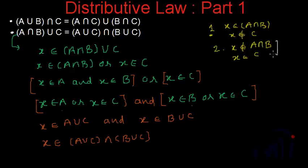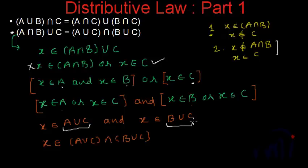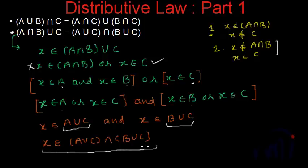For the second condition, X is not in A intersection B but it is in C. If X is not in A intersection B, it may not be in A or B or both. But since it is in C, even if it is not in A and B, it will definitely be in A union C and B union C because it is in C. And if it is in both A union C and B union C, it will be in their intersection also.